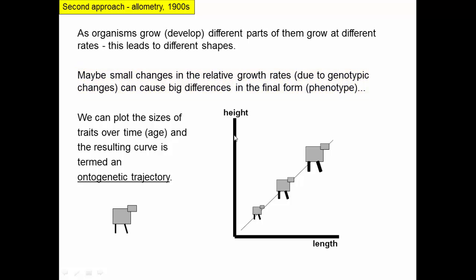One way to study this would be to plot the sizes of traits over time — so the age of the organism, not geologic time. We're looking at the age of a particular organism and its development. This resulting curve is an ontogenetic trajectory, a trajectory of development.